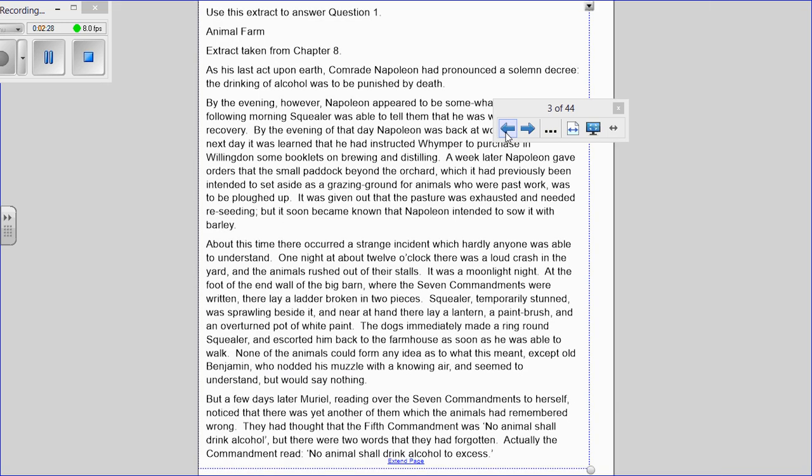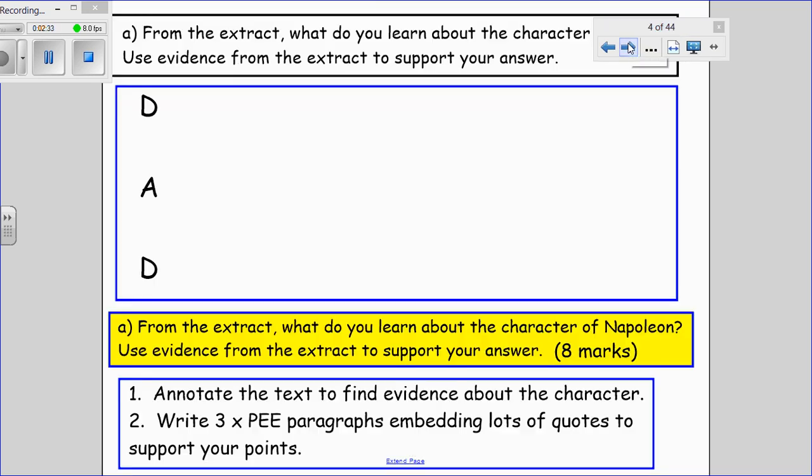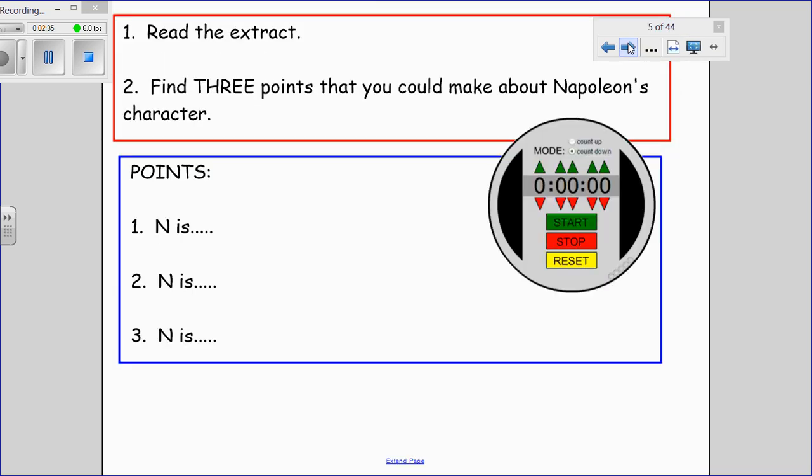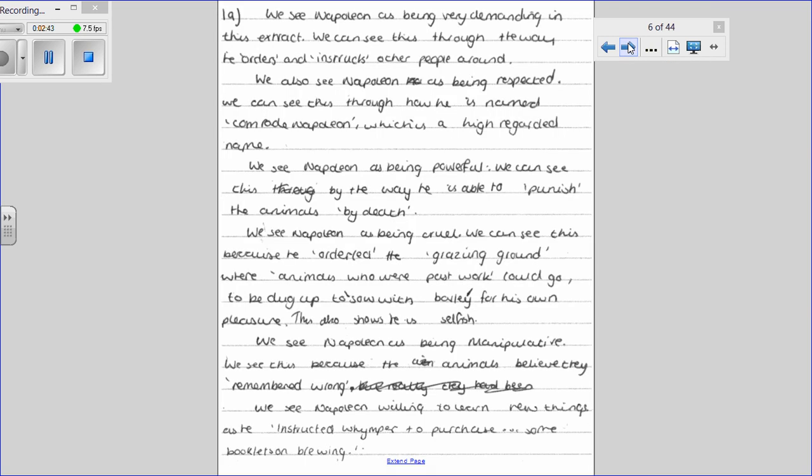If you've read through the extract and made your three points, then you need to think about how you put those together into an essay example. This example here is a good example where you can see that the candidate has made very clear points, very thorough points about the character. We can see Napoleon being demanding; they've embedded their quotations to show how the character has been demanding.